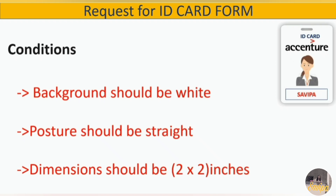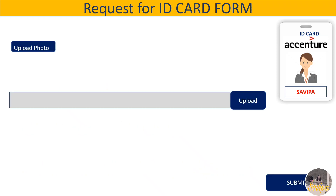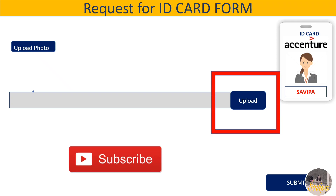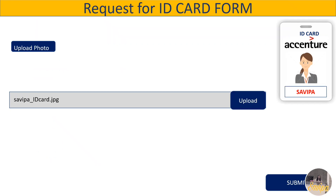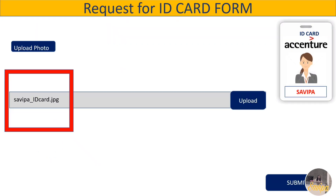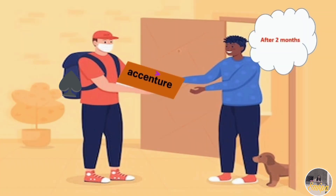Before uploading, make sure you follow all three conditions, because if you fail to follow any of them your photo will be rejected and you'll have to upload again. When you click 'Upload Photo,' you'll see a button to upload the picture. Browse your image file and upload it. Once all conditions are met and the image is uploaded, click Submit. After submitting, you will receive your ID card within two to three months — I received mine in two months, but a colleague received theirs after three months. Make sure to keep your ID card safe, as losing it will result in a fine of approximately 3,000 rupees.